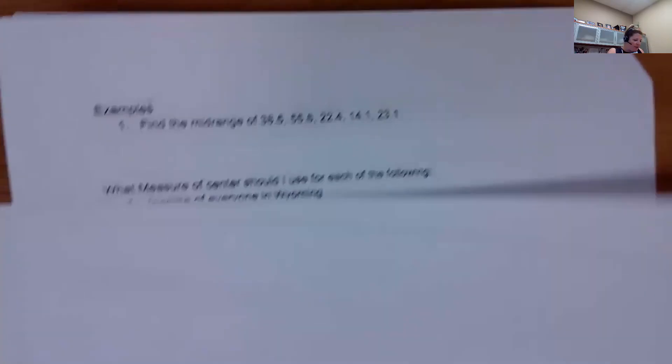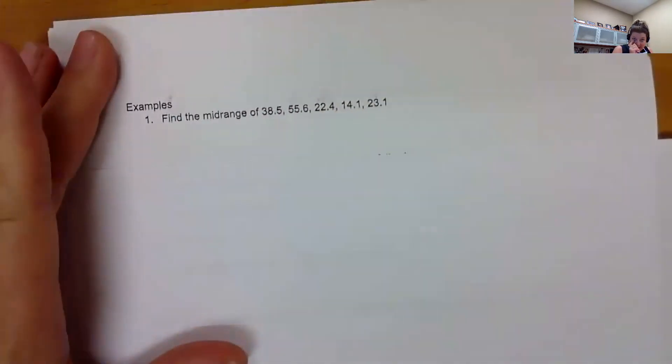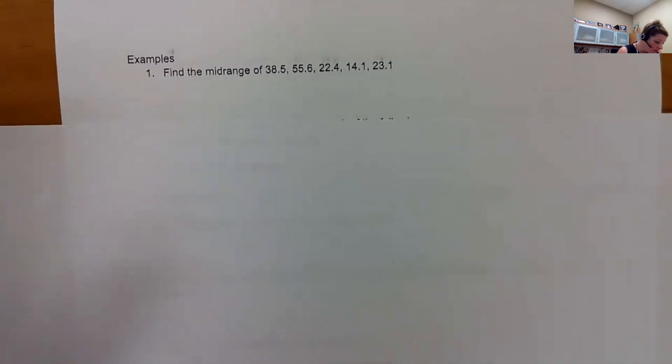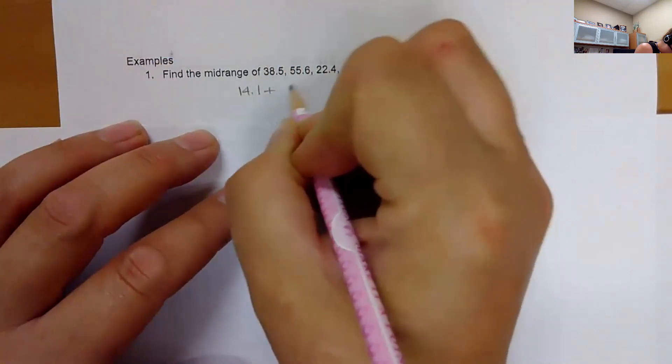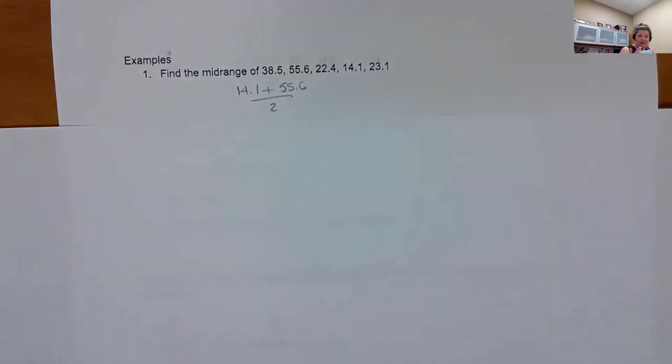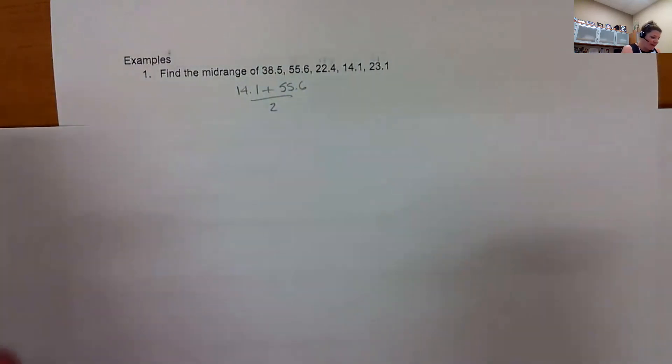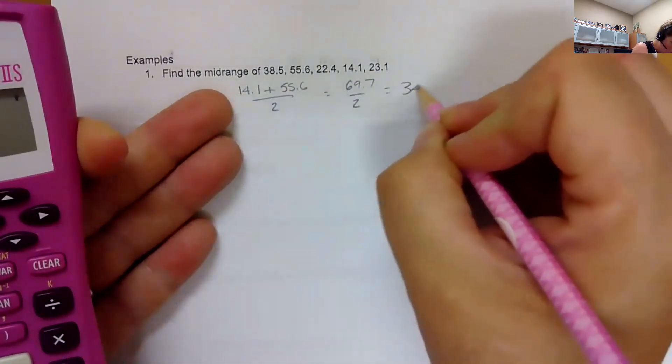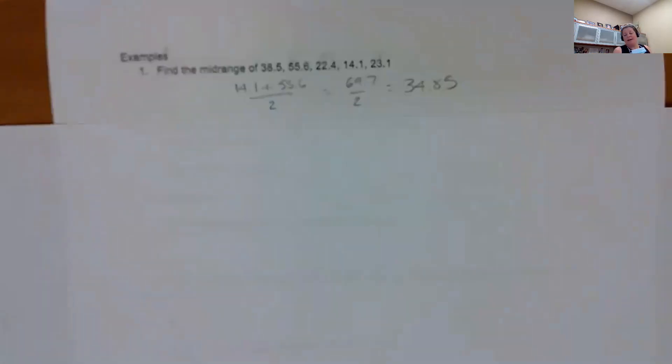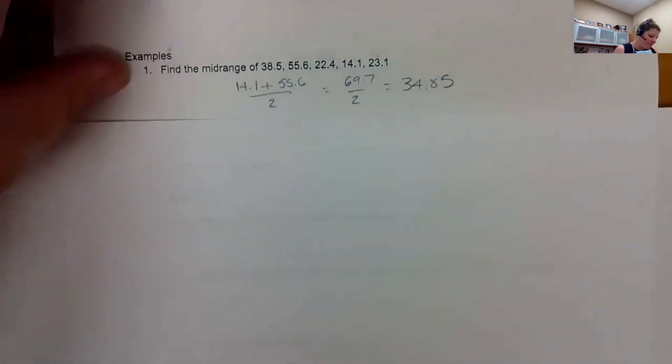So let's do an example of the midrange. Midrange of this data set: we have to find the lowest number, which is 14.1, plus the highest number, which is 55.6, divide that by two. This is going to be 69.7 divided by two. So the middle is about 34.85. So same data, and we've done a couple of times and they've all been in the thirties.